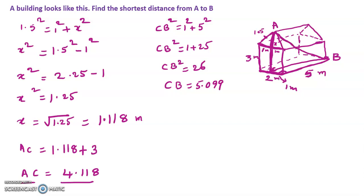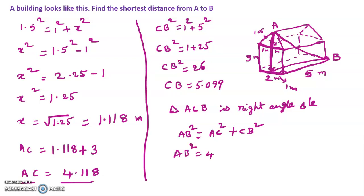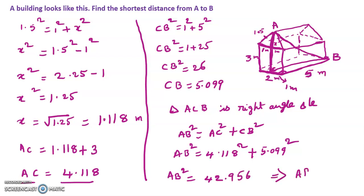Now we got CB. Now we have to find AB. Triangle ACB is a right-angle triangle, so AB² = AC² + CB² = 4.118² + 5.099² = 42.956. Therefore AB = √42.956 = 6.55 meters. This is the shortest distance from A to B.